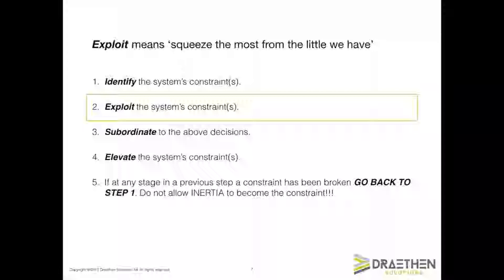Sometimes CCRs run out of work orders to work on; sometimes they only have the wrong work orders. Sometimes, if the CCR is a machine, it can stop at shift changes or breaks. If we want to exploit the capacity of the CCR, we must make sure we do everything possible to ensure the CCR is always able to work. This will immediately increase the rate of throughput at the CCR, and reduce the manufacturing lead time for the plant as a whole.